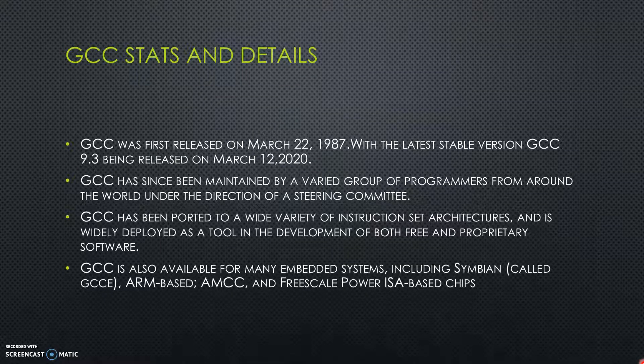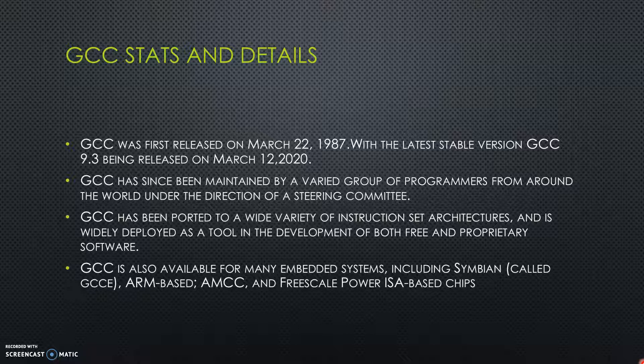It was first released in March 1987 and has been updated regularly ever since, with patches being released almost every month. The GCC is maintained by a varied group of programmers from around the world. It has been ported to a wide variety of ISAs and is widely deployed as a tool in the development of free and proprietary software. GCC is also available for many embedded systems, including Symbian, ARM-based, and Freescale Power-based ISA-based chips.